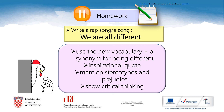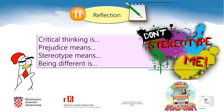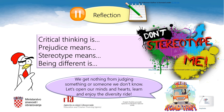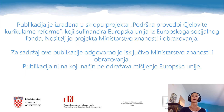Let's reflect on today's lesson. Pause the lesson, copy these beginnings of sentences into your notebooks and finish them in silence or while listening to Ebony and Ivory or the Black Eyed Peas. And remember, we get nothing from judging something or someone we don't know. Let's open our minds and hearts, learn and enjoy the diversity ride. Thank you all for watching and taking part in this lesson. I truly hope you have enjoyed it and learned something new. Until the next time, goodbye!